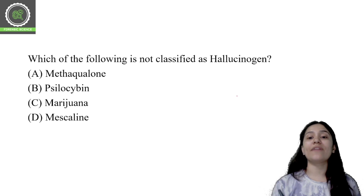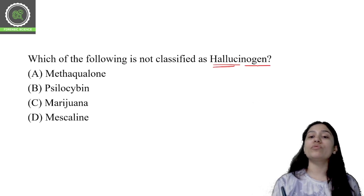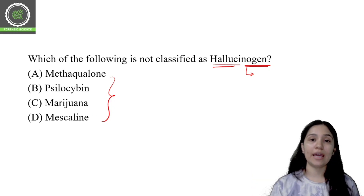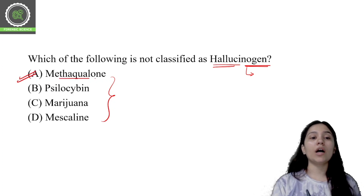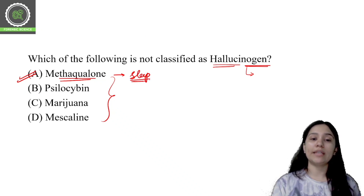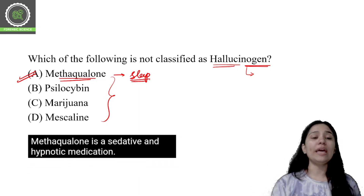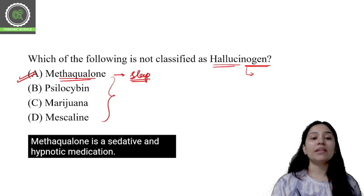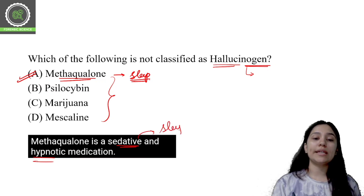Next question: which of the following is NOT classified as a hallucinogen? One of the options is a drug that does not create hallucinations, and you have to pick that one. The correct option is option A: Methaqualone. Methaqualone is a sedative-hypnotic drug which induces sleep — it is a CNS depressant, not a hallucinogen. The remaining options B, C, and D are all hallucinogens.